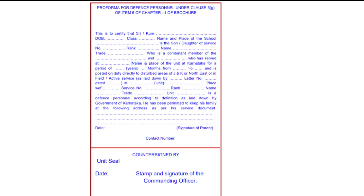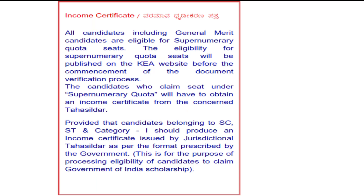Next is the income certificate. This is very crucial information. For students in Category 1, SC, ST categories, an income certificate must be produced to get into the supernumeric quota. For SC/ST students, income certificate and caste certificate are separate. For OBC (2A, 2B categories), both income and caste are combined in one certificate called Form F.